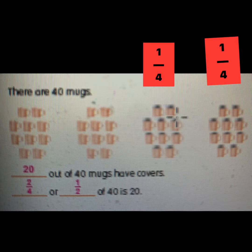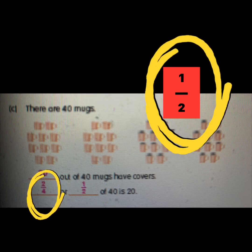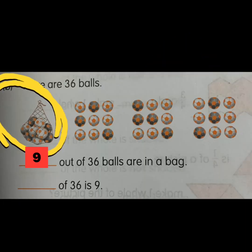Pay attention to the first question. There are 40 mugs and a quarter of the 40 mugs have covers. The first group and the second group is a quarter, so quarter and quarter makes half. Half of the whole group has covers, and the rest half don't have covers. You can write this as two of the four groups have covers, or you can say half of the groups have covers.